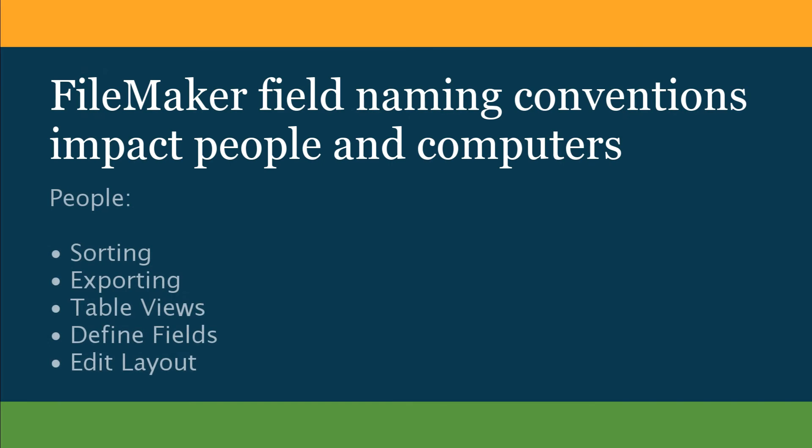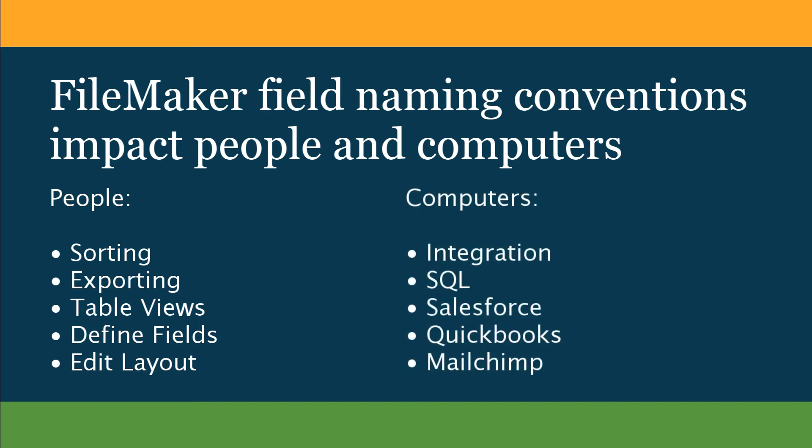FileMaker field naming conventions impact people and computers. People see field names when they do day-to-day activities like sorting, exporting, looking at data in a table view, defining fields, or editing in a layout. Computers rely on field names that have no spaces in them so that they can talk to each other well. Places where computers talk to each other are in integrations — they could be SQL databases, or services like Salesforce, QuickBooks, or MailChimp.